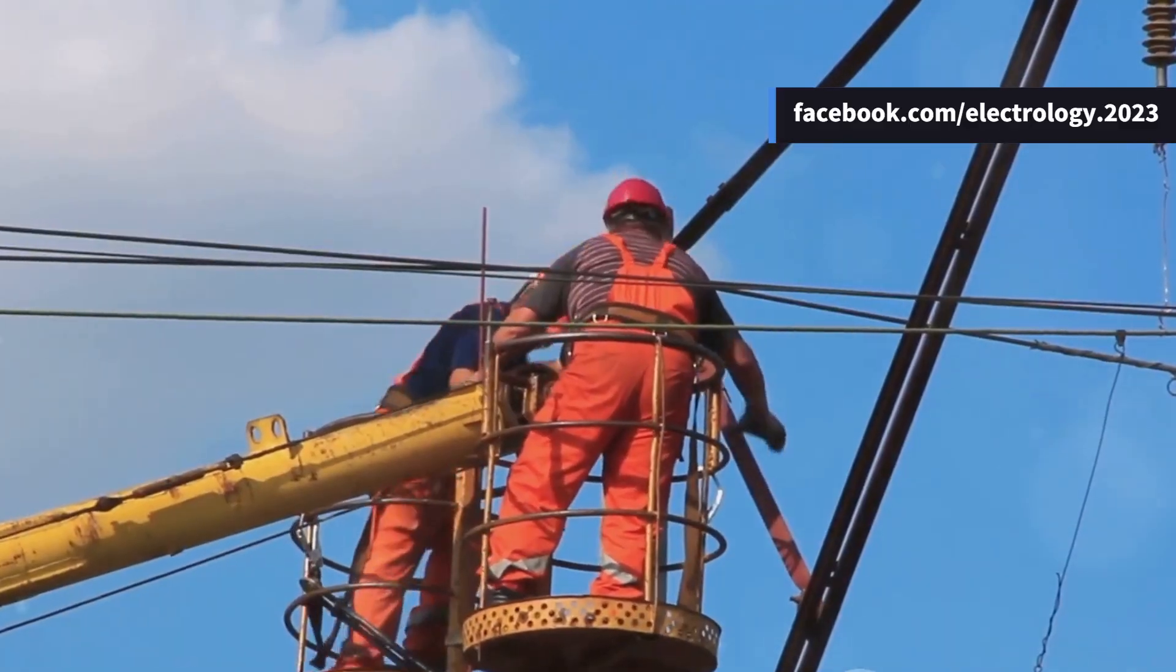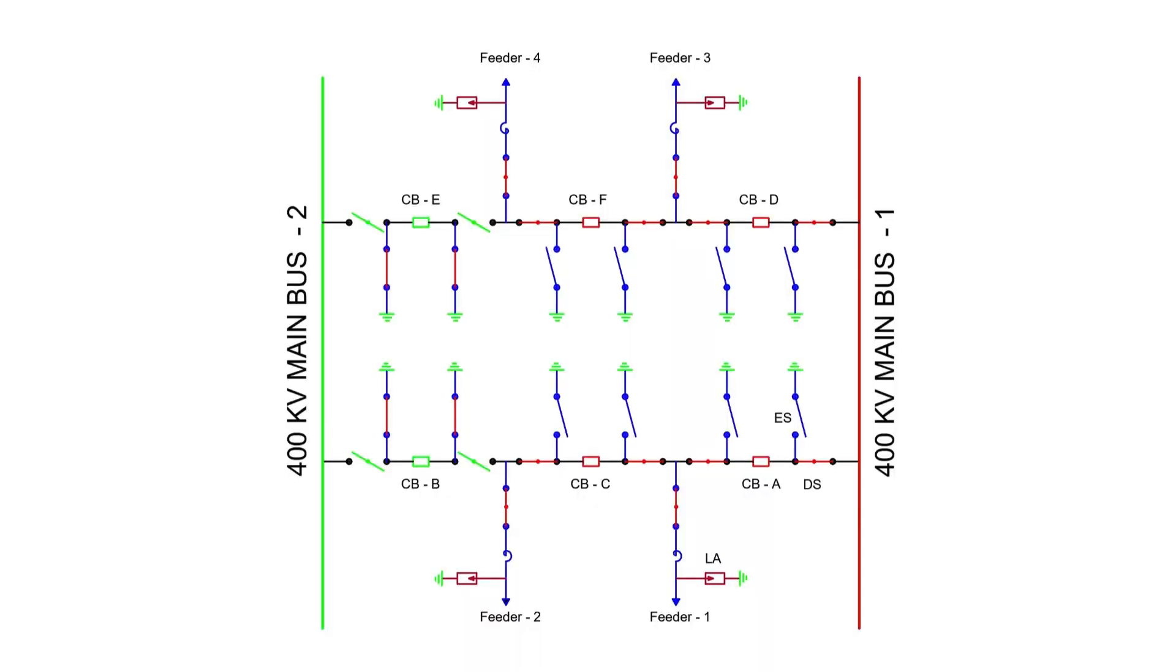Flexible maintenance. Either bus can be taken out of service for maintenance without interrupting power to the feeders. Maintenance of more than one breaker is also possible without any loss of service. There's no need for isolator operations when switching between buses as all three breakers remain closed during normal operation.